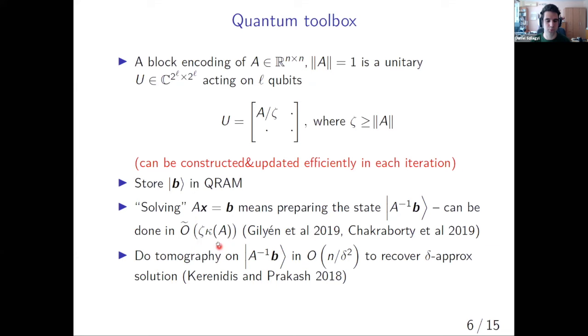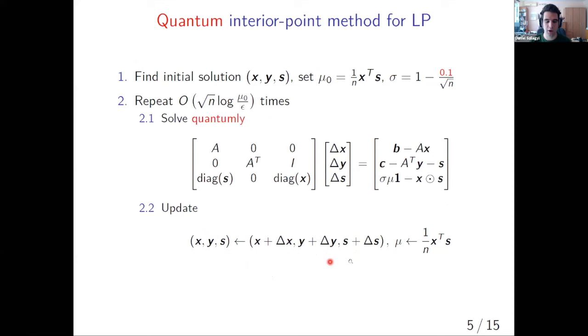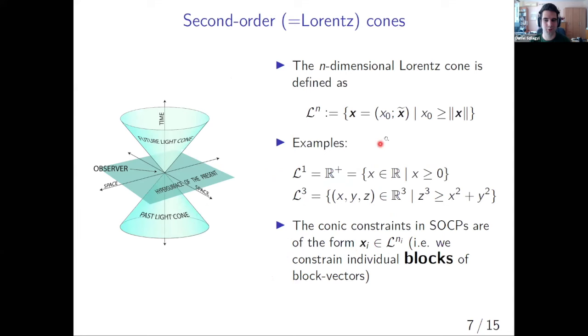At the end, because we want a classical solution of our linear system, we need to perform tomography on this state corresponding to our solution. And this can also be done using well-known tomography algorithms. The bulk of the analysis of this algorithm goes towards proving that even if we solve our linear systems approximately, everything works out fine. So finally, we can move on to the topic of our talk, that is second order cones.